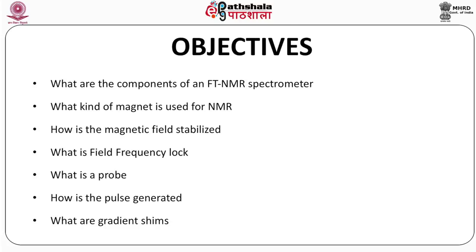The objectives of this module are to explain what are the components of an FT-NMR spectrometer, what kind of magnet is used for NMR, how is the magnetic field stabilized, what is field frequency lock, what is a probe, how is the pulse generated, and what are gradient shims.